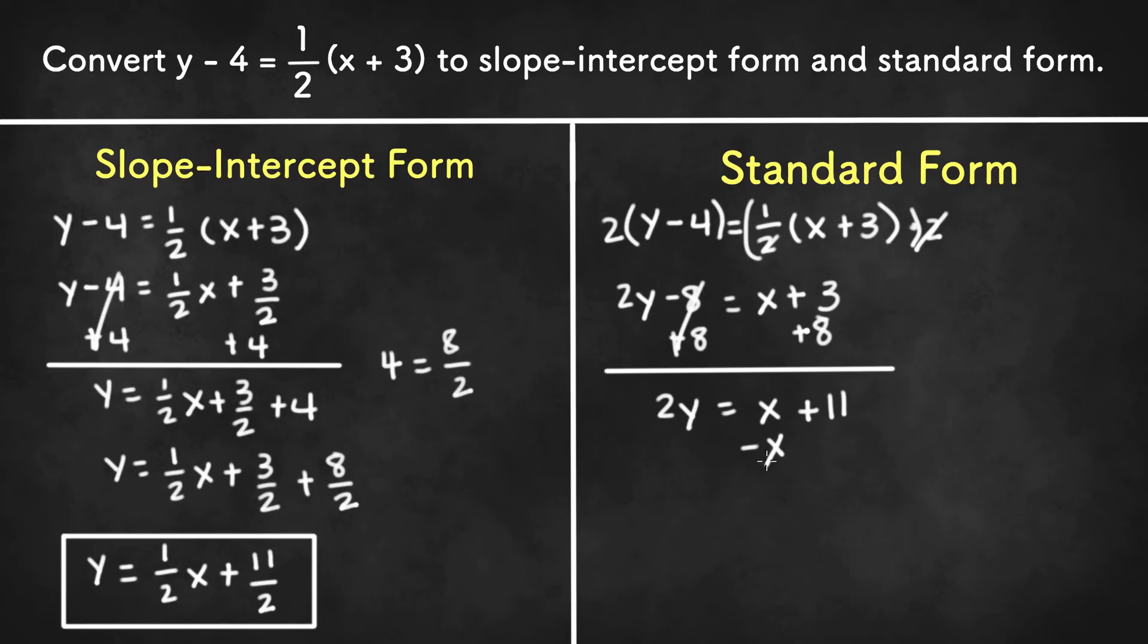Now we can subtract both sides by x to get the x on the left-hand side. So we have 2y minus x, or negative x plus 2y, since x value goes first in standard form, equals 11.